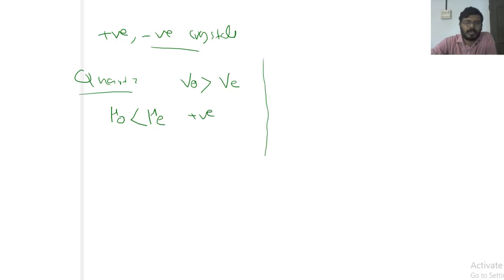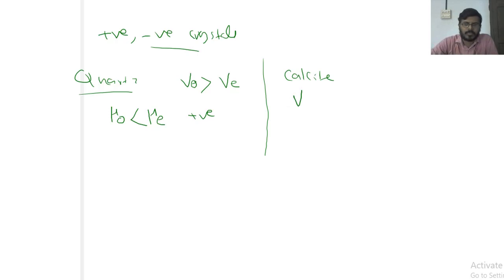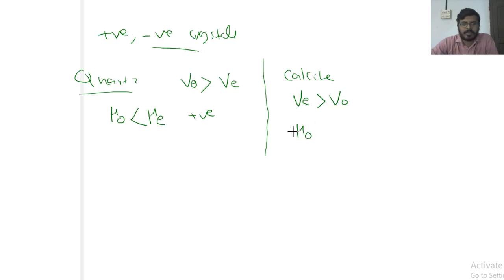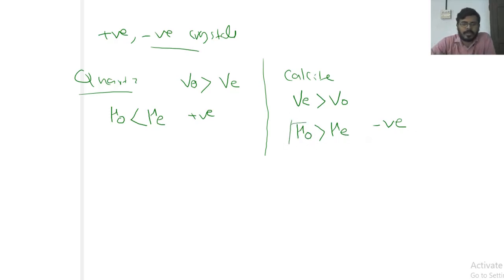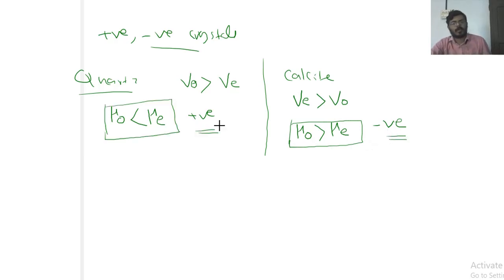For calcite crystal, the extraordinary ray travels much faster than the ordinary ray, so the velocity of the extraordinary ray V-E is greater than V-O. Here the refractive index of the ordinary ray is greater than the refractive index of the extraordinary ray, and we call this a negative crystal. So quartz is an example of a positive crystal and calcite is an example of a negative crystal.